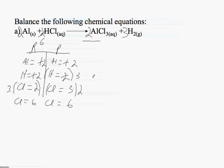So my equation will end up looking like this. 2 aluminum plus 6 HCl goes to 2 AlCl3 plus 3 H2.